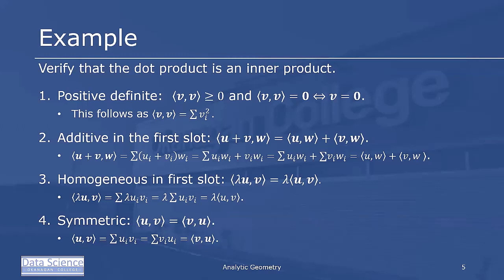Next we want to show that it's additive in the first slot. So we look at the inner product of u plus v with w. According to our definition, that's the sum of (u_i plus v_i) times w_i, which equals the sum of u_i w_i plus v_i w_i. We can break that sum up: the first sum is the inner product of u and w, and the second is the inner product of v and w.